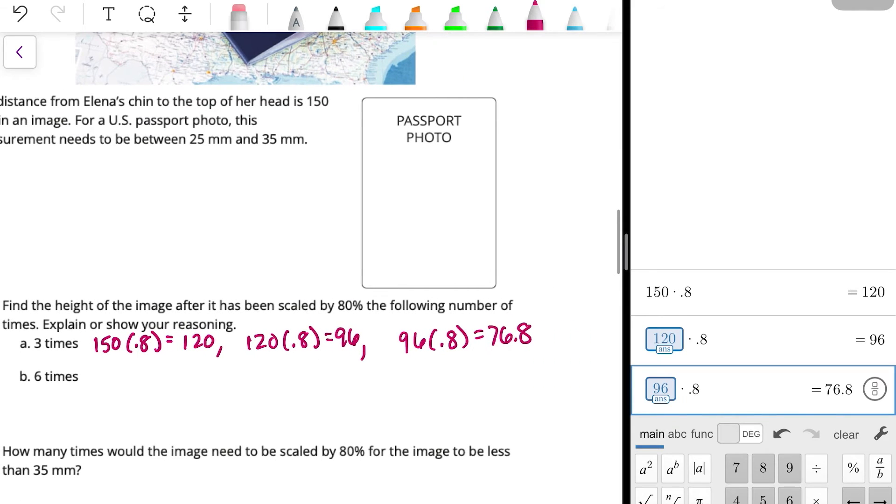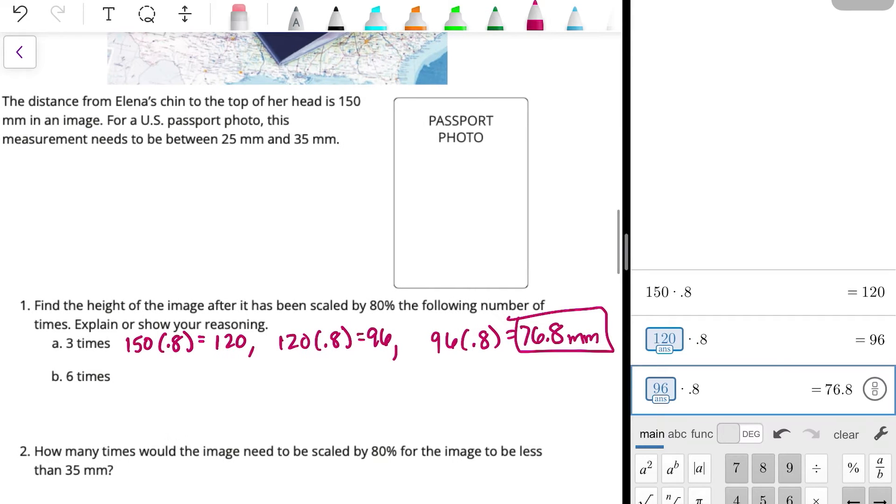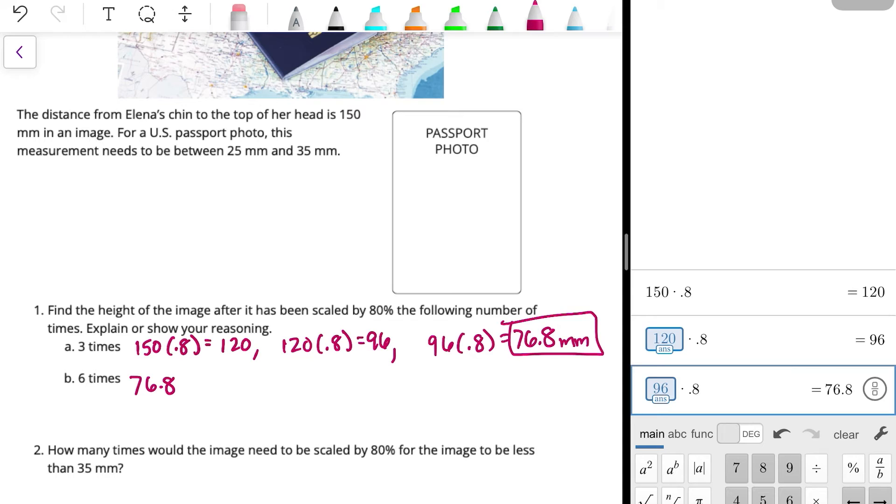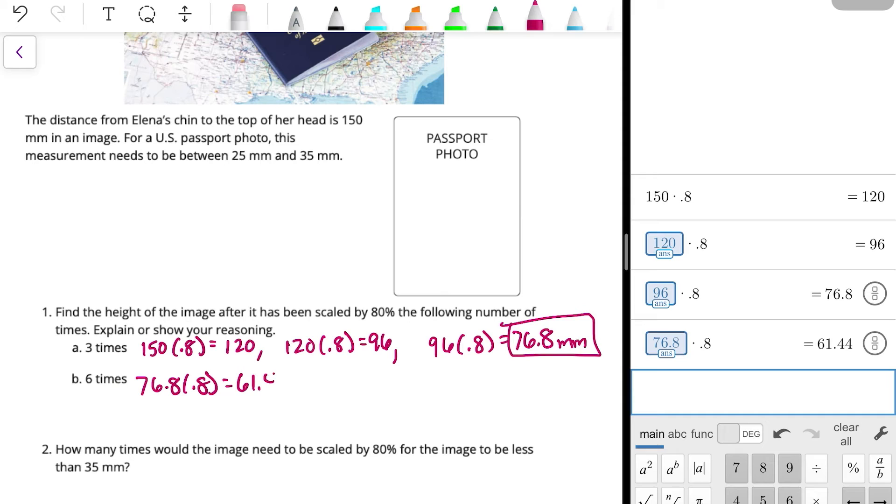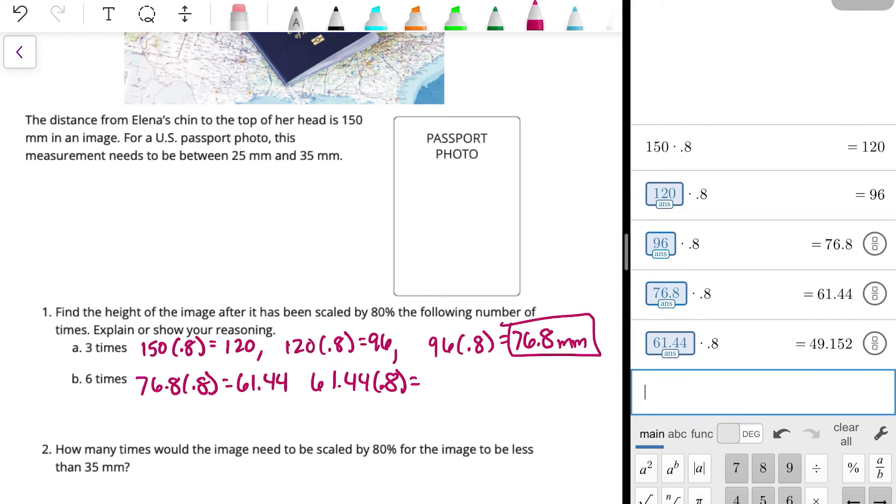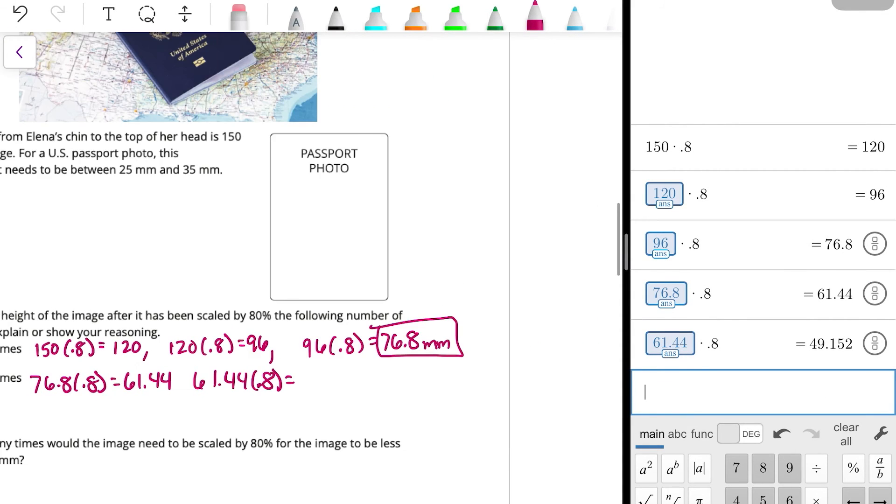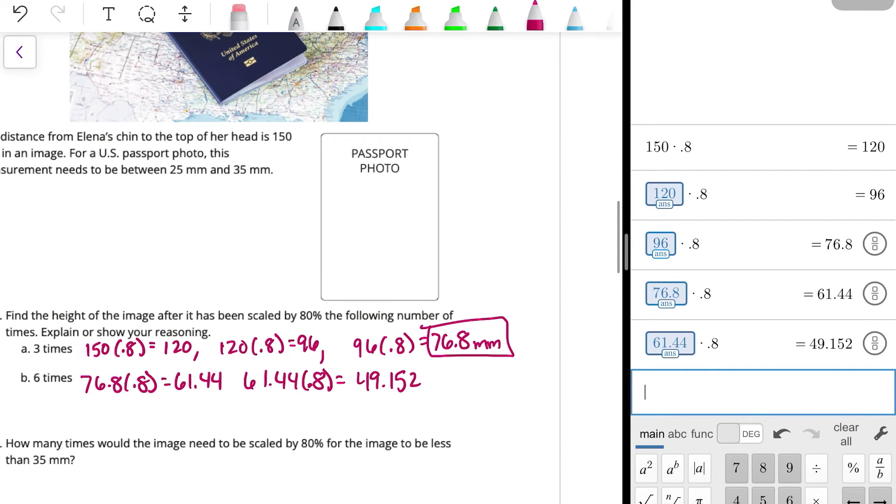And so here, let's do this. There we go. And then we're going to take that 76.8 and multiply by 80%. So we'll come back to our calculator, multiply that by 80%. So we get 61.44, and then 61.44 times 0.8. Let's come back to the calculator. Times 0.8 is 49.152.